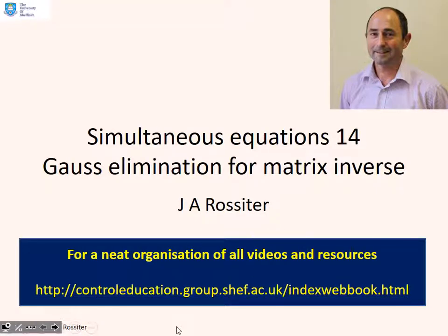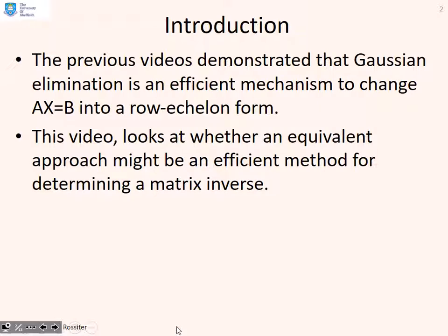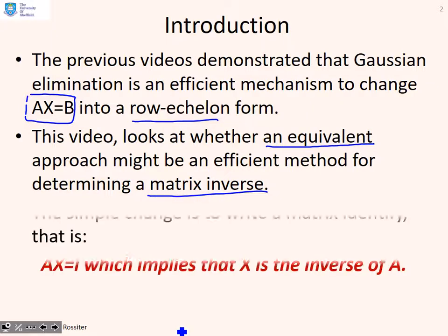The 14th in this series on simultaneous equations looks at the use of Gaussian elimination for finding a matrix inverse. The previous videos demonstrated that Gaussian elimination is an efficient mechanism to change a matrix from Ax = b into row echelon form. This video looks at whether an equivalent approach might be an efficient method for determining a matrix inverse.